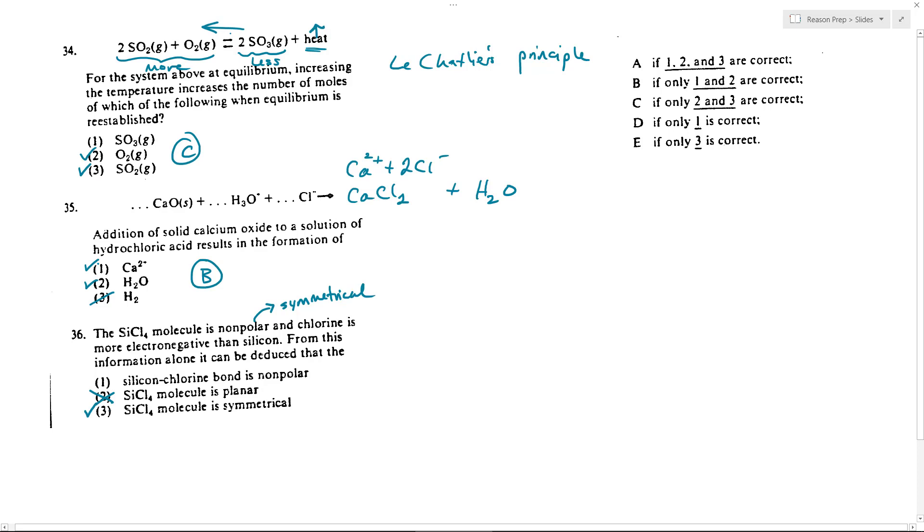And then finally, the silicon-chlorine bond is non-polar. No, we have an electronegativity difference. Si and Cl have got different electronegativities. We know that from the periodic table, but they also just tell us here. And so we know that since these two atoms have different electronegativities, then the bond between them is polar.